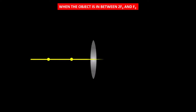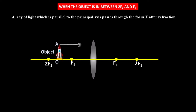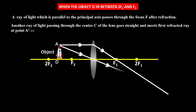Now let us see where the image is formed when the object is between 2f2 and f2. Let this be the lens and principal axis with the points on the principal axis. Let the object be placed between 2f2 and f2. A ray of light parallel to the principal axis passes through focus f after refraction. Another ray passing through the center C of the lens goes straight and meets the first ray at point A' on the other side of the lens.